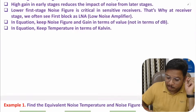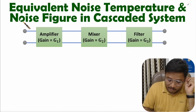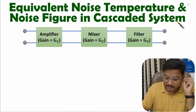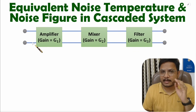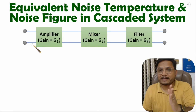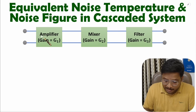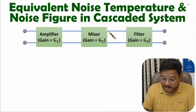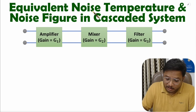Let me explain the calculation of equivalent noise temperature and equivalent noise figure in a cascaded system. You can observe here we have a cascaded system, which means multiple blocks are connected in series. The first block is an amplifier, the second block is a mixer, and the third block is a filter. I will explain how to identify equivalent noise temperature and equivalent noise figure for these three blocks.